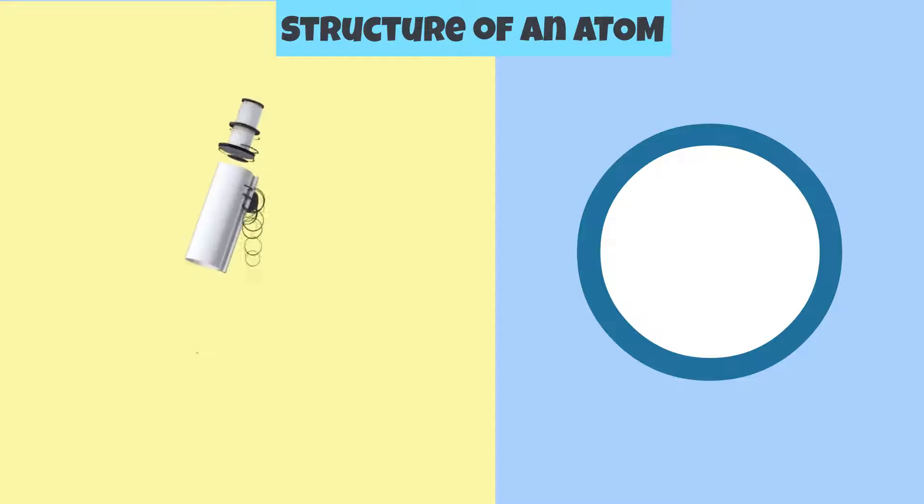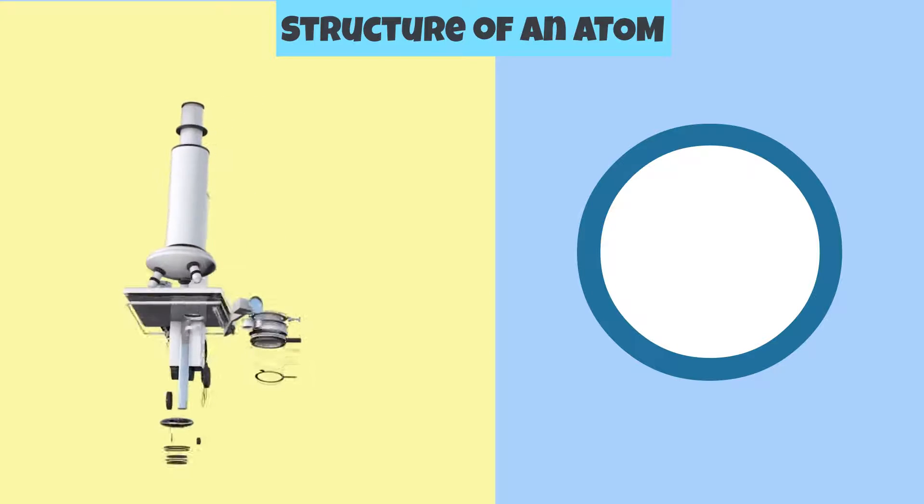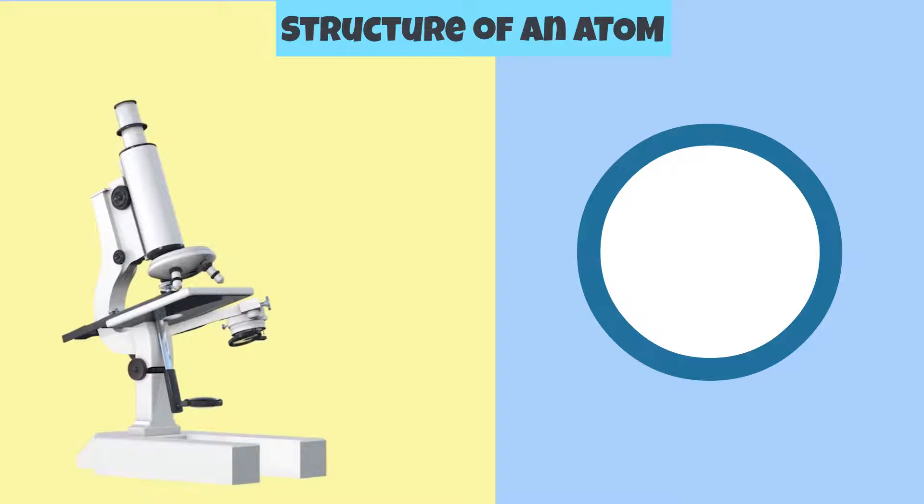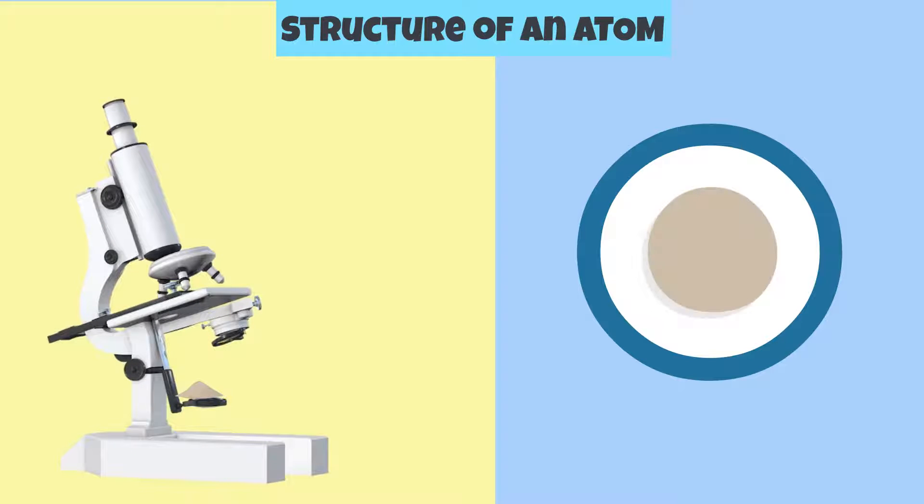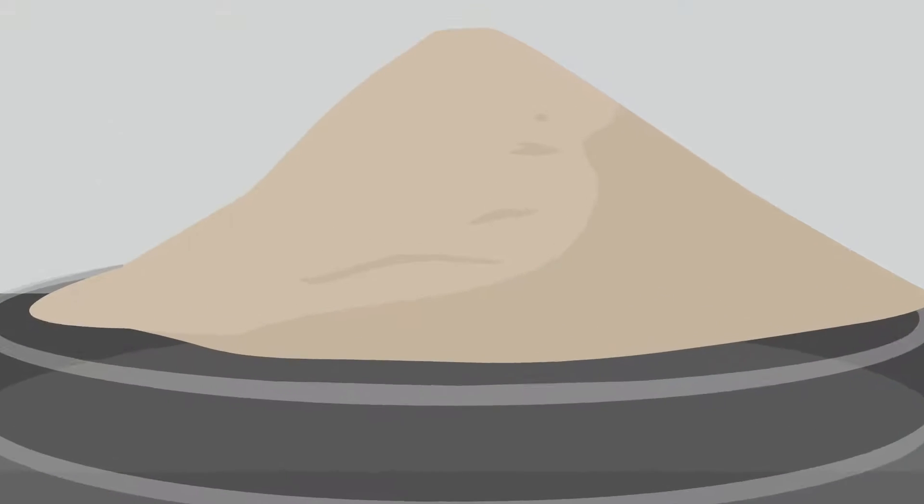Let's say we had an incredibly powerful microscope that has the ability to zoom in billions and millions of times. If we put a single particle of sand under it and zoom in far enough, we would see that these tiny sand particles are made up of millions of atoms.